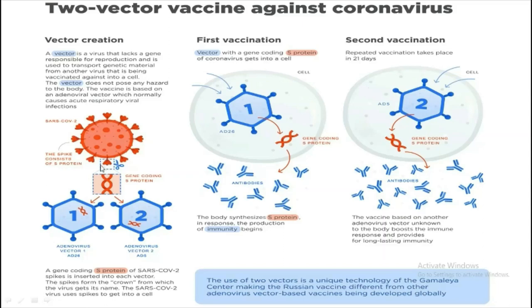Looking at the figure: this is the coronavirus and its spike protein. Two types of adenovirus vectors are used — Ad26 and Ad5. The gene coding for the S protein of SARS-CoV-2 spike is inserted into each vector. This forms the first and second vaccination doses respectively. The virus is called coronavirus because the spike protein gives a crown-like appearance to the virus.